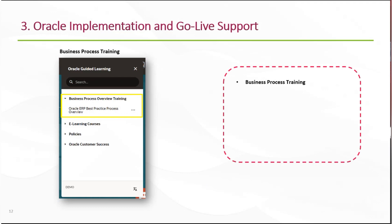The third area, which we've found is very useful, is Oracle implementation and go-live support. OGL provides easy access to business process training for your project team during the implementation process, and that can be followed by additional in-system guidance via My Oracle Support. This consists of guides designed by the My Oracle Support team to support HCM and ERP specialists and application administrators as they work in the application on set-up, maintenance and admin tasks.